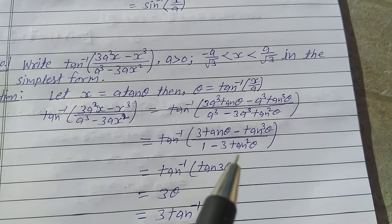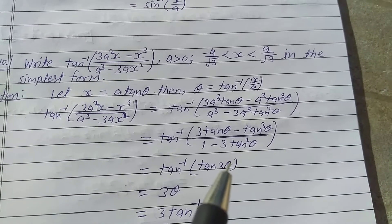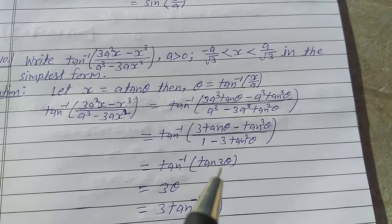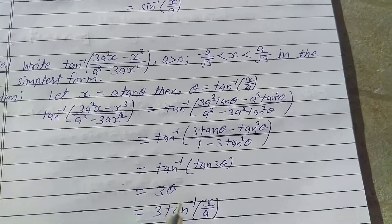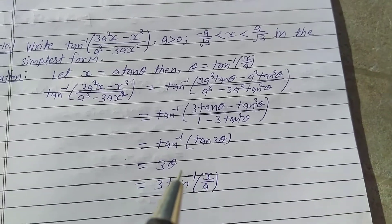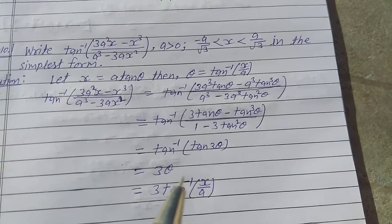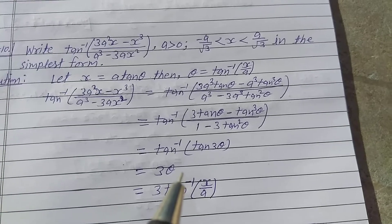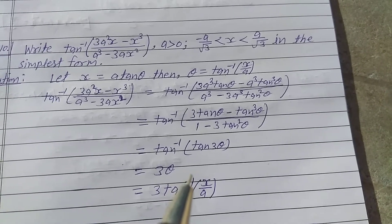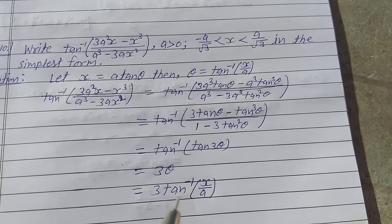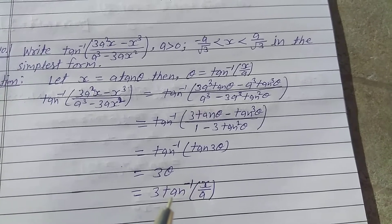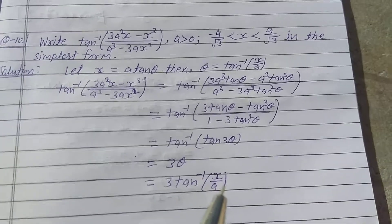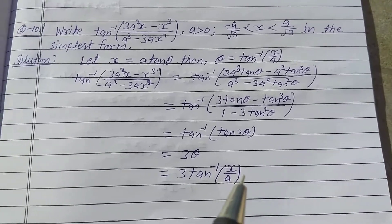This is the formula of tan(3θ), so it equals tan⁻¹(tan(3θ)), which equals 3θ. Putting the value θ equal to tan⁻¹(x/a), the answer is 3·tan⁻¹(x/a). This is the solution.